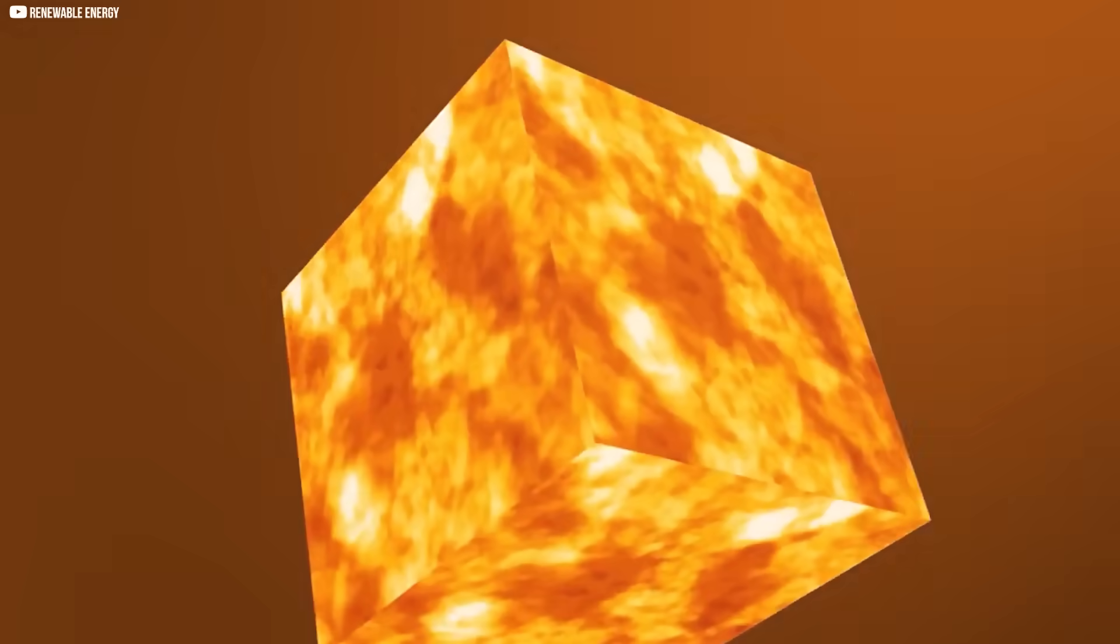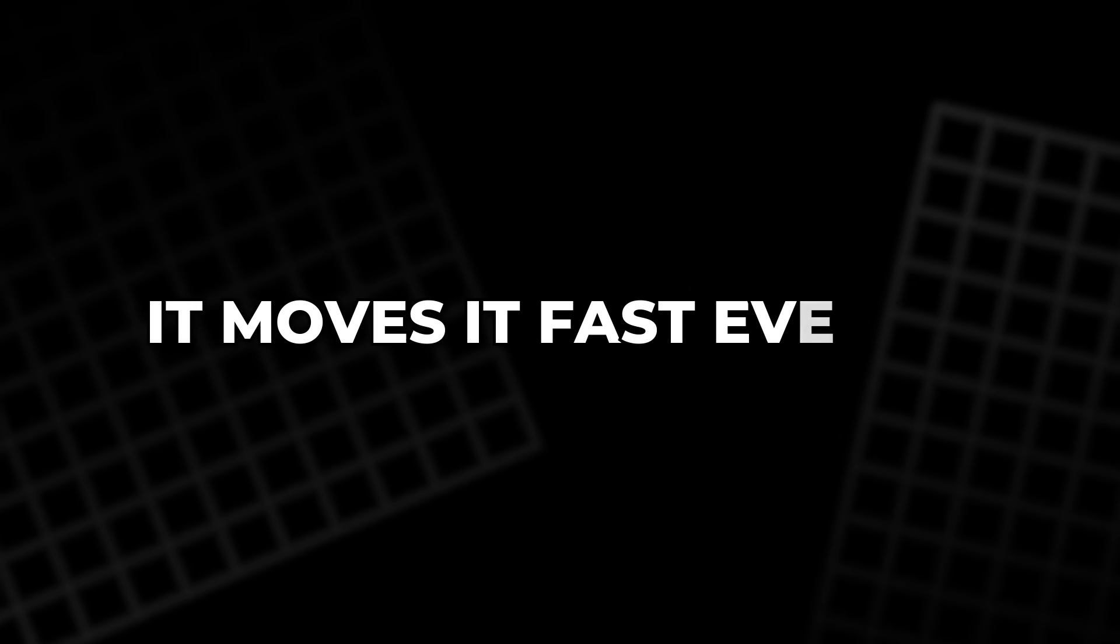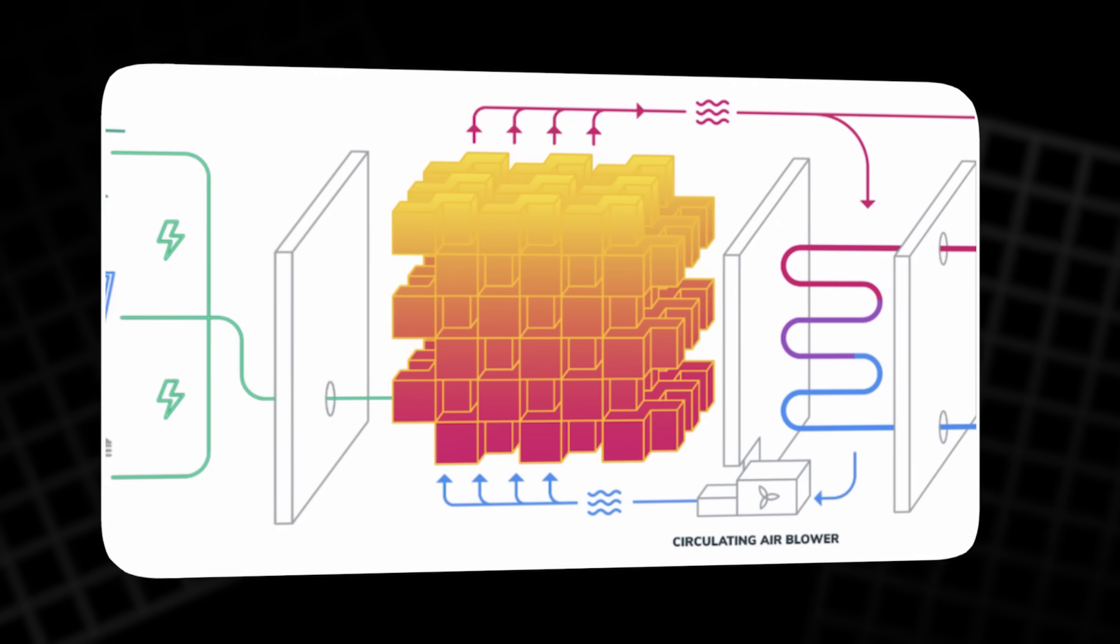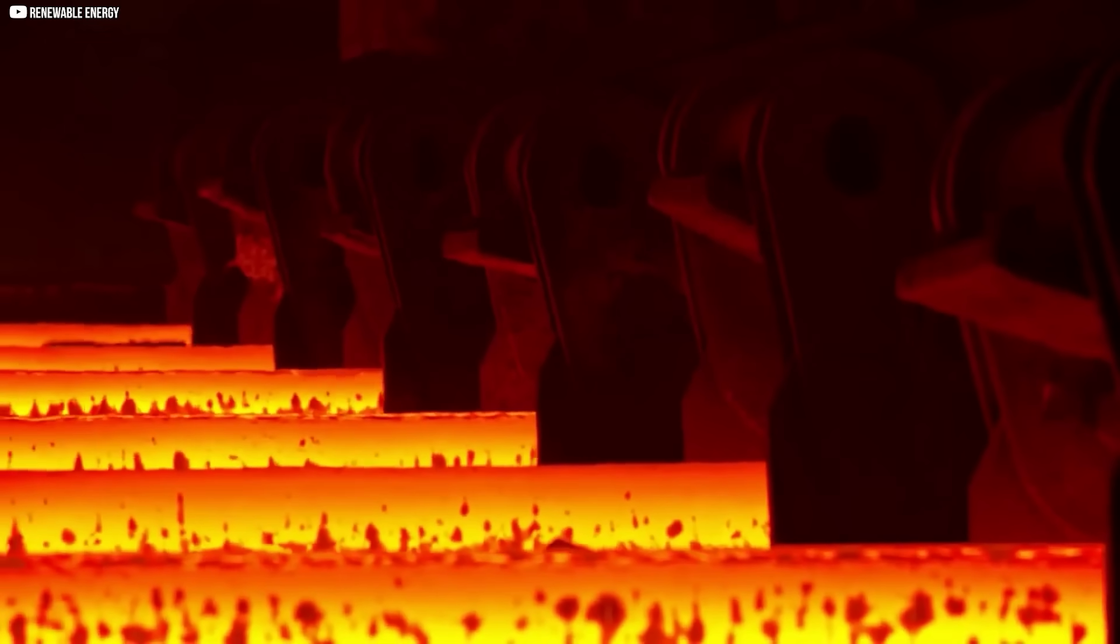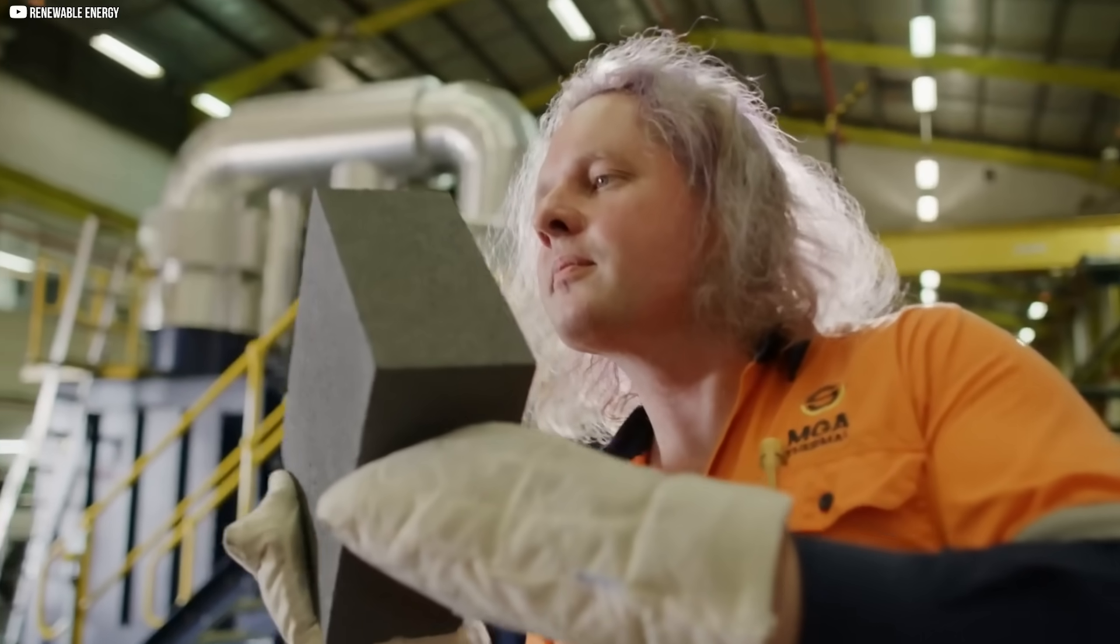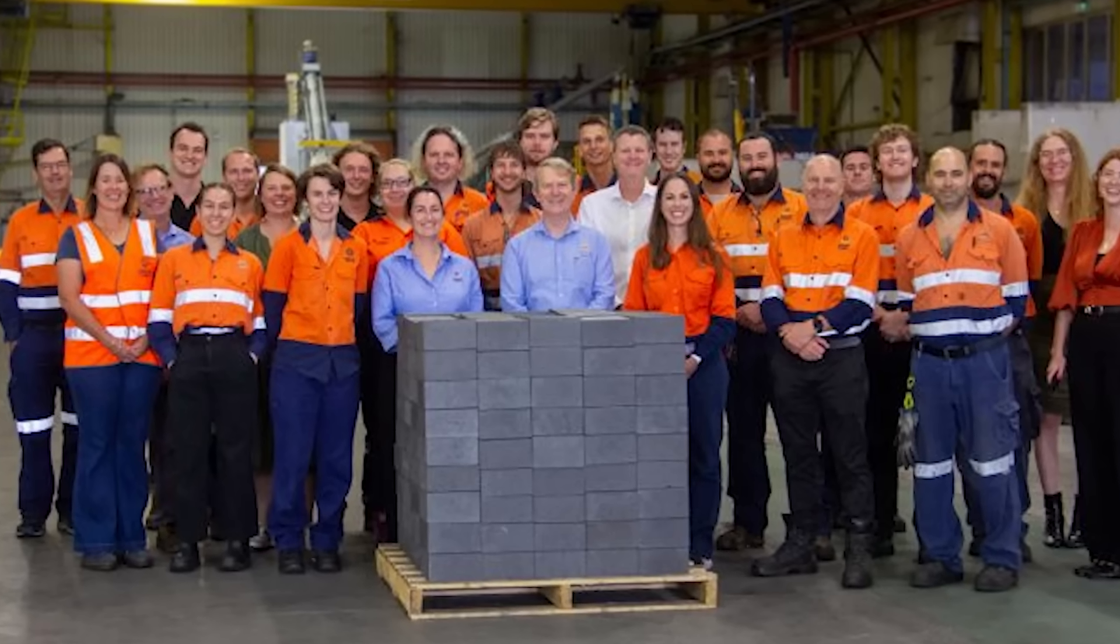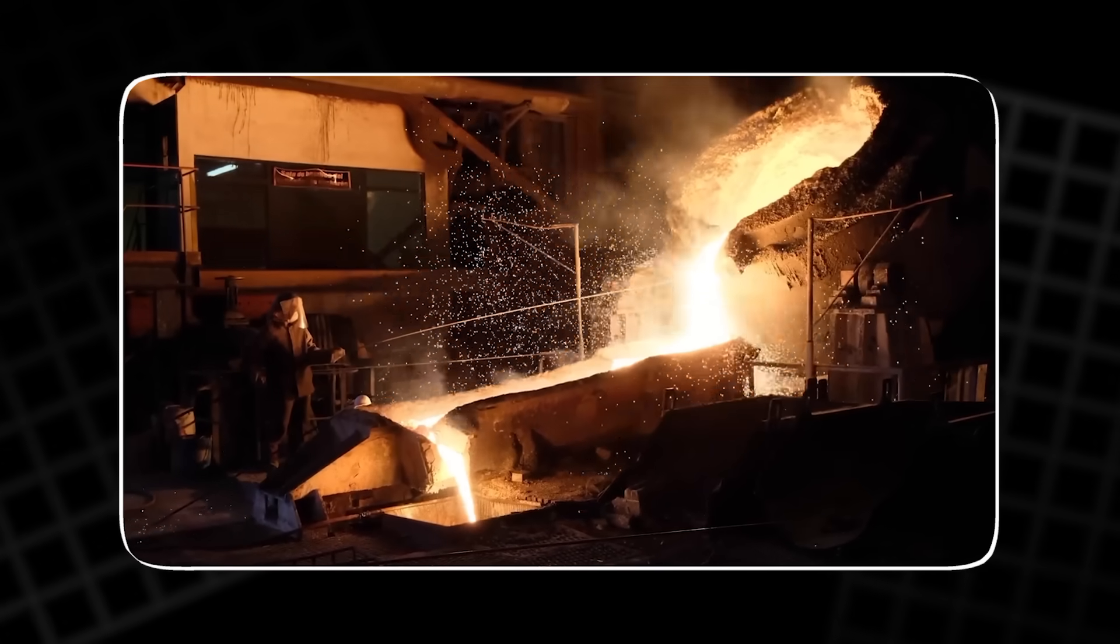And there's something more. Conductivity. The block doesn't just store heat. It moves it. Fast. Evenly. That means every inch of it can be charged or discharged with efficiency. No hot spots. No cold patches. Just controlled, predictable power. Other systems might store heat with molten salts or bricks. But none do what this alloy does. None changes state so precisely. None holds their shape so elegantly.